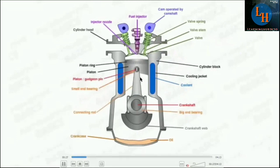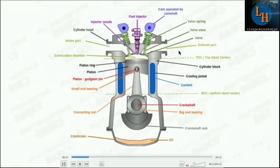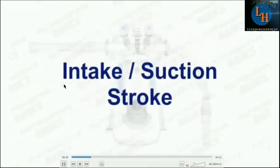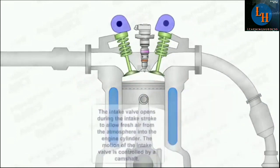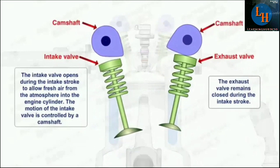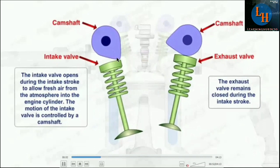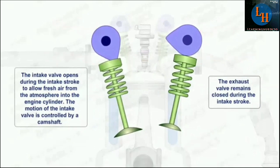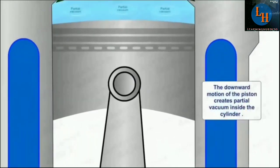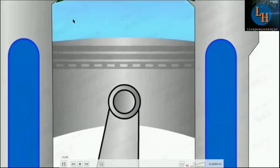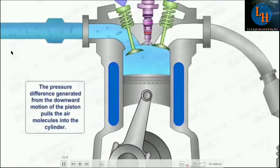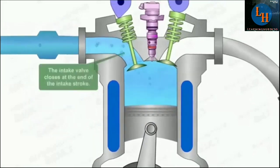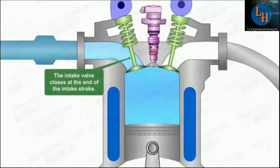This shows the connecting rod, bearings, top dead center, bottom dead center, exhaust port, and intake manifold. Starting with the first stroke — the intake or suction stroke: the inlet valve opens. The cam rotates; when it rises, the valve opens (this is called the rise period), and during the remaining period it stays closed. The piston moves downward, creating a vacuum. Pressure decreases inside the cylinder relative to outside environment pressure, so air is forced into the cylinder. At the end of the stroke, the inlet valve closes at the bottom dead center.